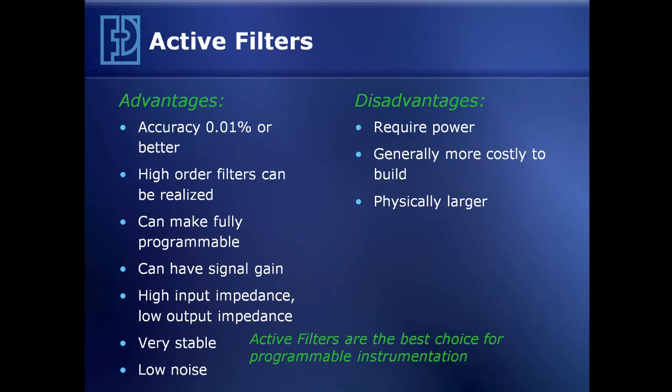The filter has extremely low self-generated noise. The disadvantage of active filters is they require power — you need constant voltage power supplies to power the active components. They're generally more costly to build and can be physically larger than a simple passive filter. But for high precision measurement class, where we're trying to make very precise AC and DC measurements, active filters are really your only choice for programmable instruments.